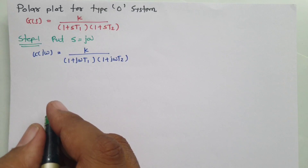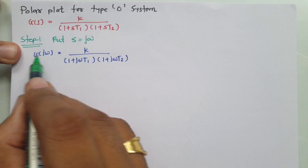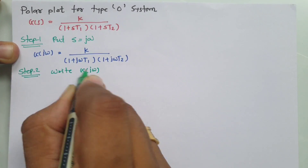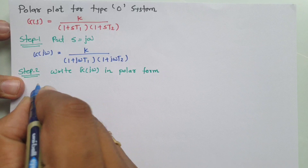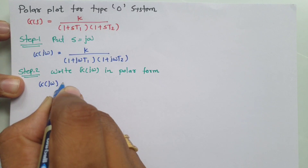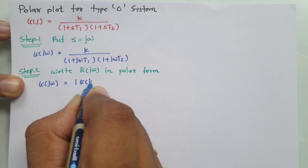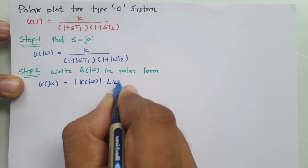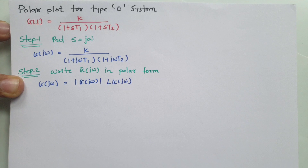In the second step, we write G(jω) in polar form. The polar form is: G(jω) equals the magnitude of G(jω) multiplied by the phase of G(jω). That is our polar form.